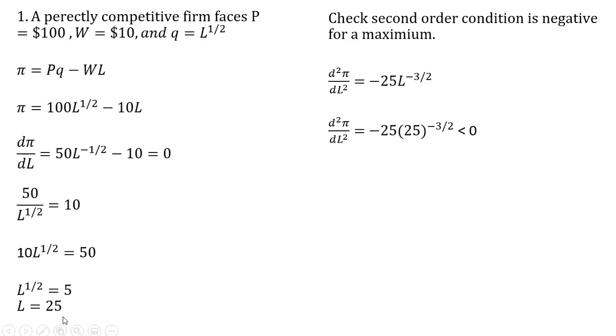And we get back minus 25L raised to the minus 3 halves power. Evaluating that L at 25, we see that the sign of this derivative here is going to be negative. We've got this negative out in front. So because this derivative has a negative sign, we are indeed at a maximum.